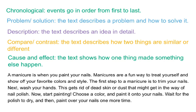Let's practice identifying the structure of a text by looking for signal words. We'll read this paragraph together. A manicure is when you paint your nails. Manicures are fun ways to treat yourself and show off your favorite colors and style. This might be a description text because it's talking about manicures in detail. Or it might be something else — let's keep reading.